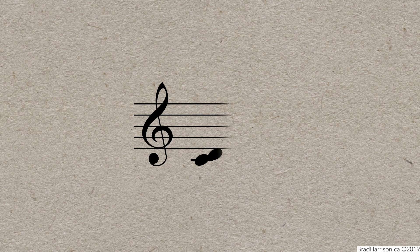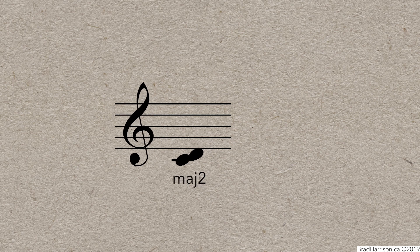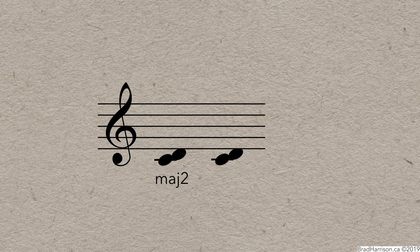An inversion occurs when you move the bottom note of an interval up the octave. Consider C and D. It's a major second. If you move the low C to high C, that's called an inversion.